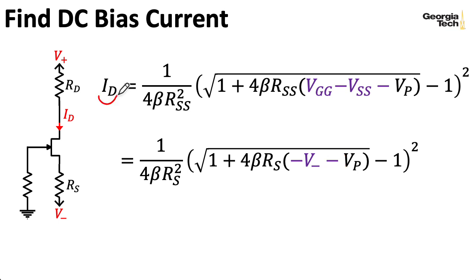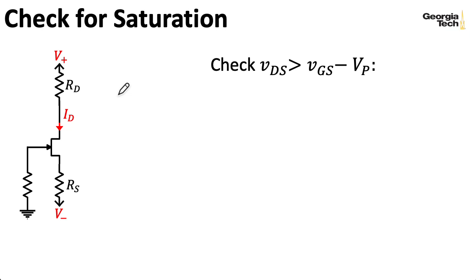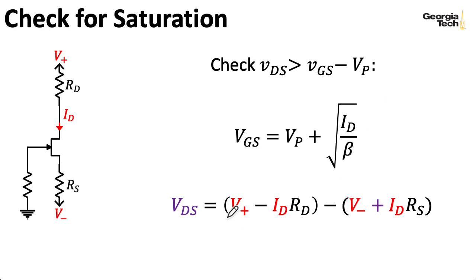Once you've computed the drain current, you can use it to check for saturation by computing the gate to source voltage using this formula here. And to compute the drain to source voltage, I can compute the voltage at the drain and take V plus and subtract the voltage lost across the drain resistor, which is ID times RD according to Ohm's law. And then I can compute the voltage at the source as V minus plus a voltage rise of ID times RS because the current is flowing the other direction compared to how I'm thinking about the voltage.